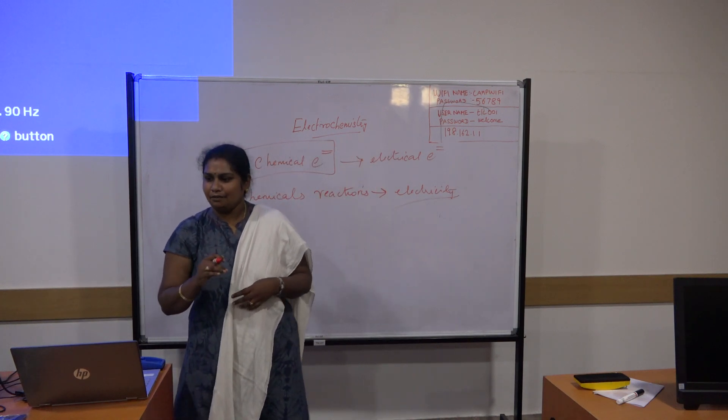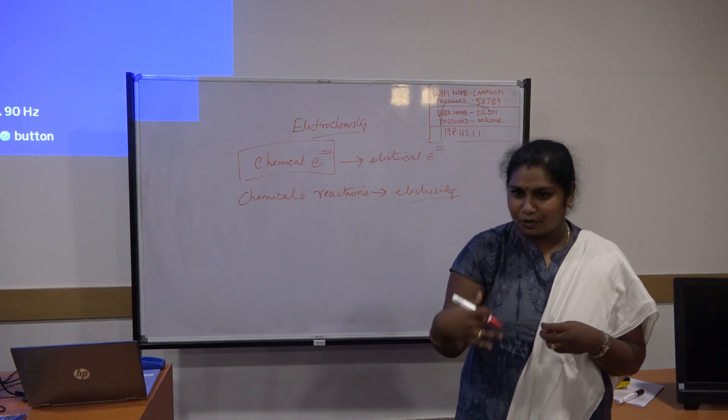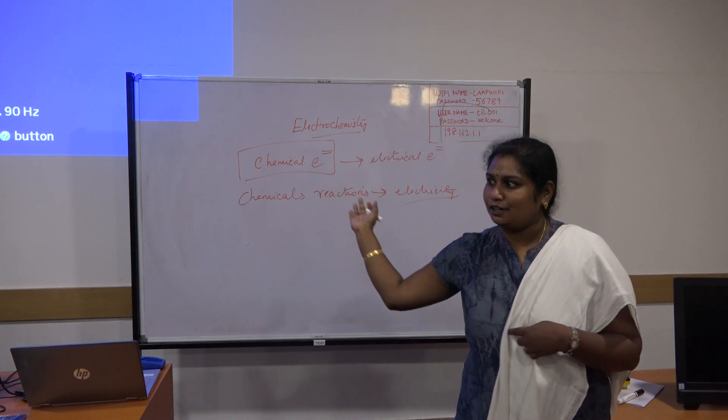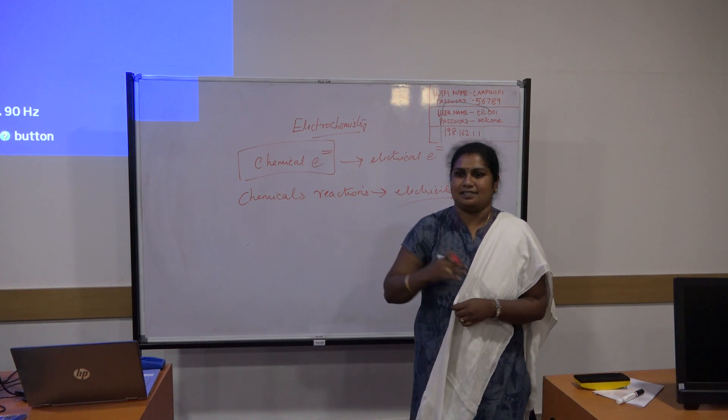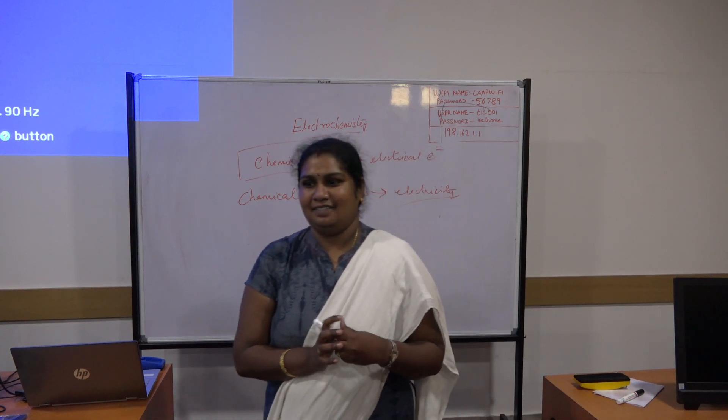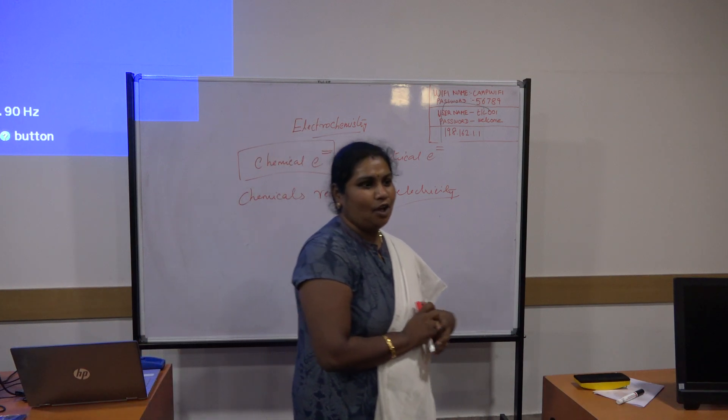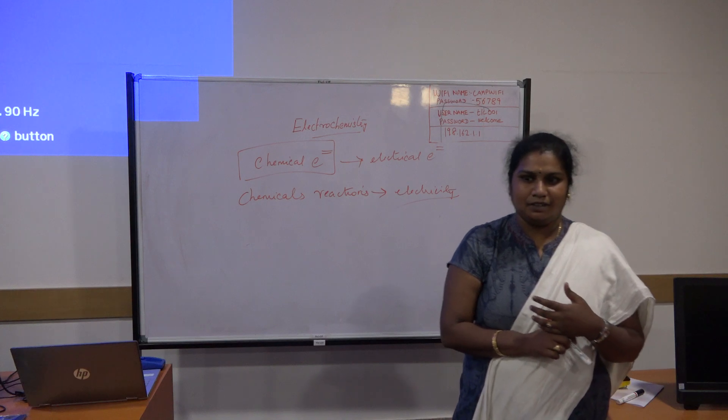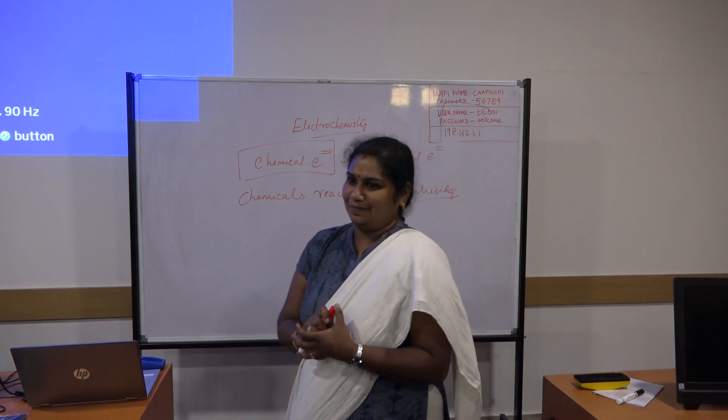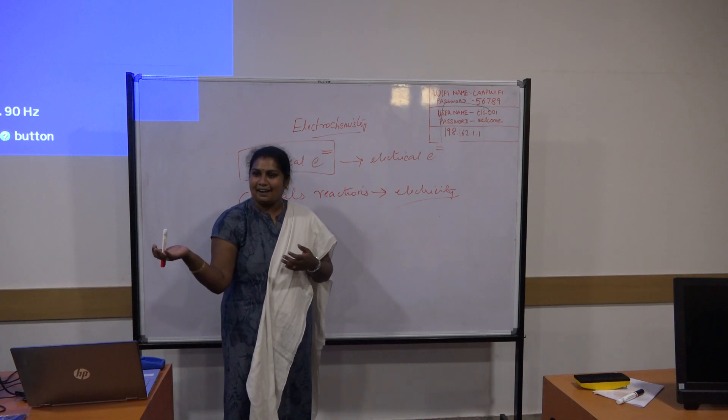In our day to day life, knowingly or unknowingly, we come across many types of electrochemical cells. Can you give some examples? Where can we see these types of electrochemical cells? What are we travelling with the electrochemistry? Unknowingly. We are travelling with the battery. Yeah, of course, battery. Very good, sir. Of course, the battery.